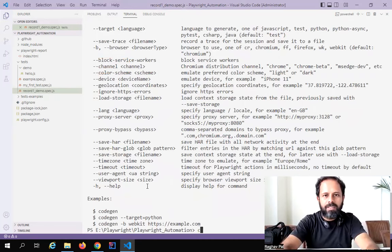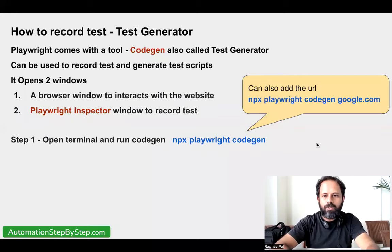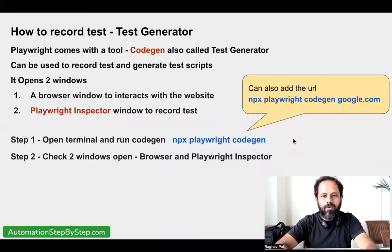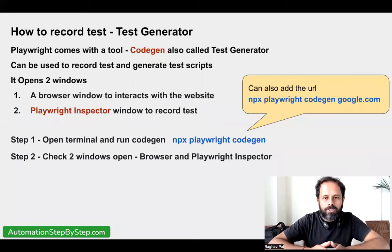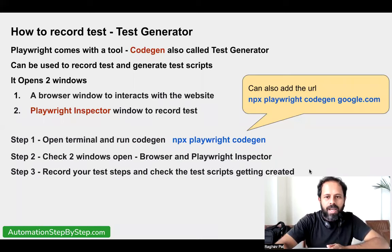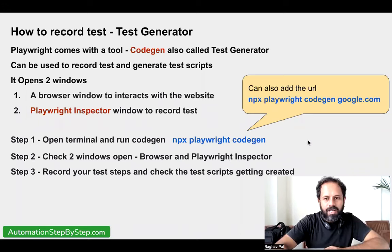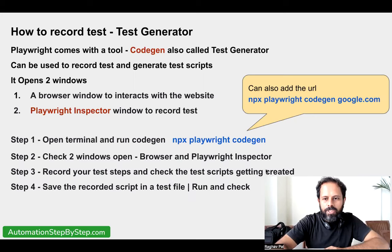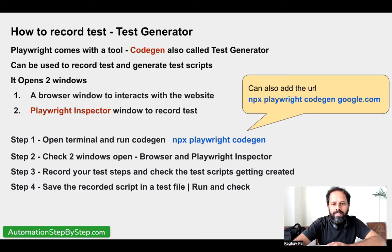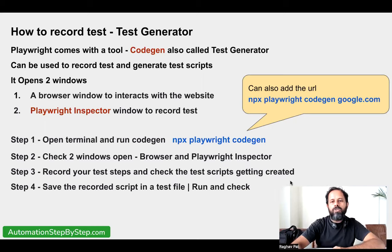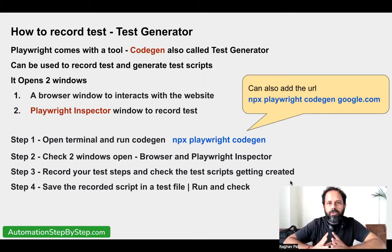We have already seen step number two — when we ran `npx playwright codegen` it opened two windows, browser and Playwright Inspector. We recorded our steps, checked the scripts were generated, saved and ran, and verified the execution. Everything was fine. If you want, you can take a screenshot and keep it handy, and watch it multiple times so you never forget what CodeGen is and how to use it.